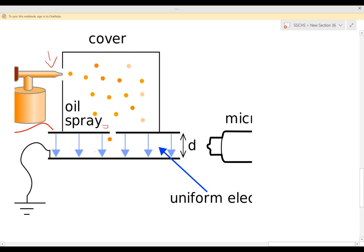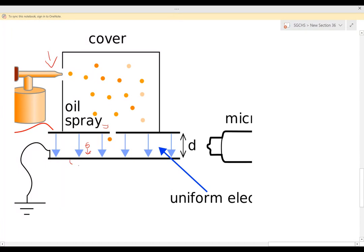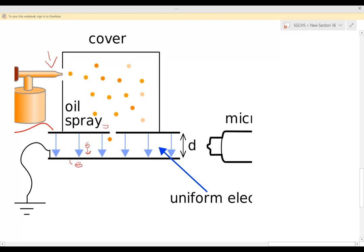This electric field is pointing downwards, and remember electric fields are based off of how a positive charge would move. So a positive charge would go downward towards the bottom plate. That means we know our bottom plate here has a negative charge, and our top plate has a positive charge.